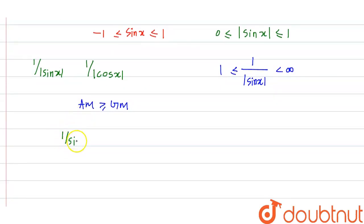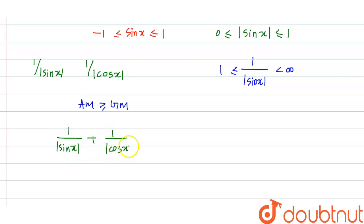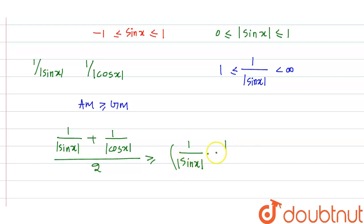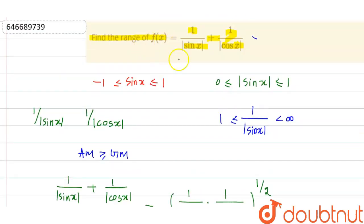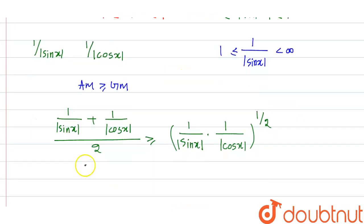Applying AM-GM: (1/|sinx| + 1/|cosx|) / 2 ≥ √(1/|sinx| · 1/|cosx|). Since f(x) = 1/|sinx| + 1/|cosx|, we have f(x)/2 ≥ √(1/(|sinx|·|cosx|)).